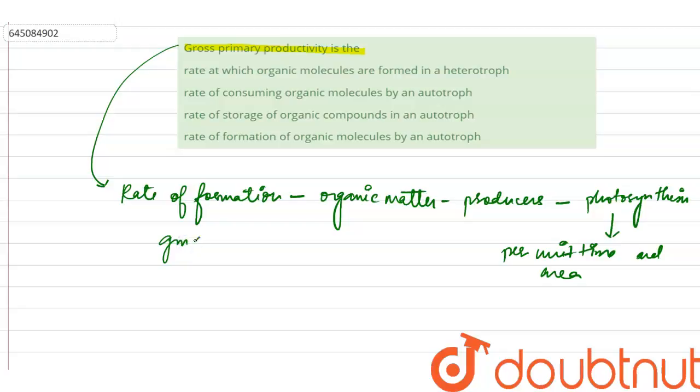This is known as our gross primary productivity. Now this is calculated mainly as gram meter square per year, okay?